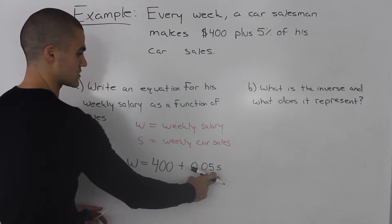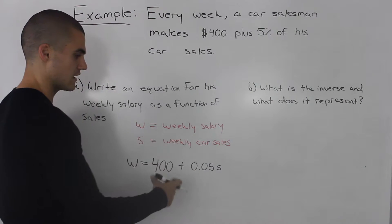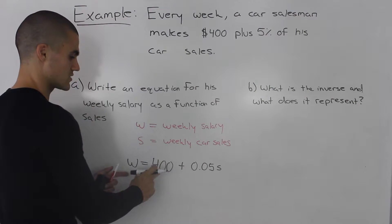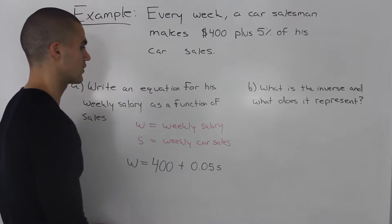Or, for example, if his weekly car sales were $1,000, 5% of $1,000, 0.05 times $1,000, would be $50. Then his weekly salary would be $400 plus $50, so $450 in total.